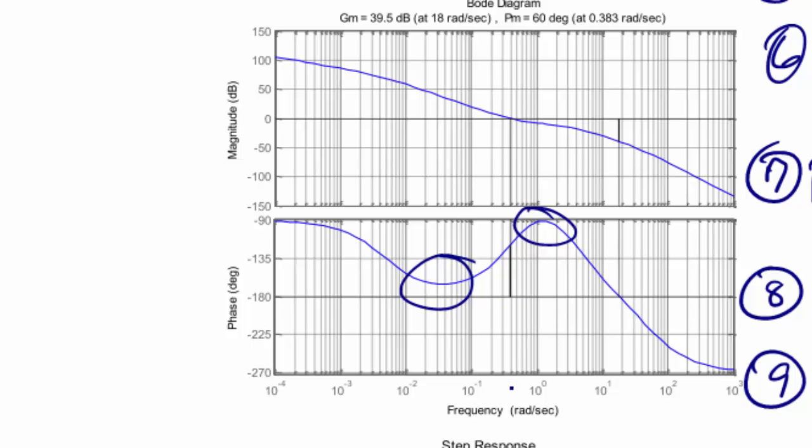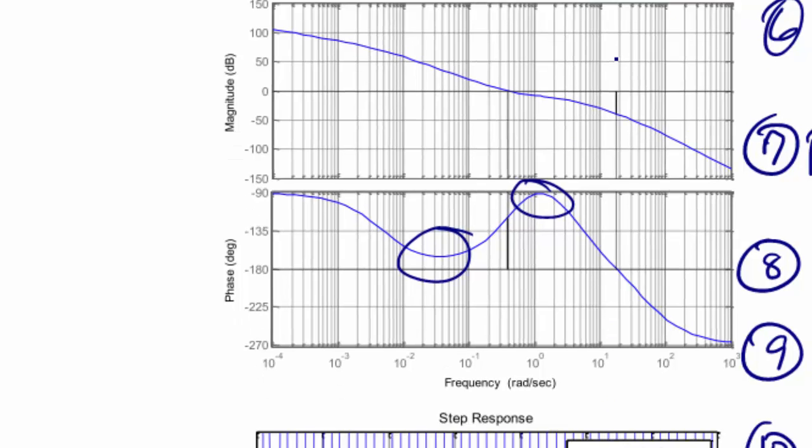And what you should see here is that right here towards the center, we do have a phase margin now of 60 degrees at 0.383 radians per second. So we have satisfied the phase margin requirement.